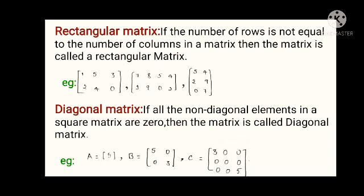For diagonal matrix examples: the first example is 1 by 1, the second is 2 by 2, and the third one is 3 by 3.